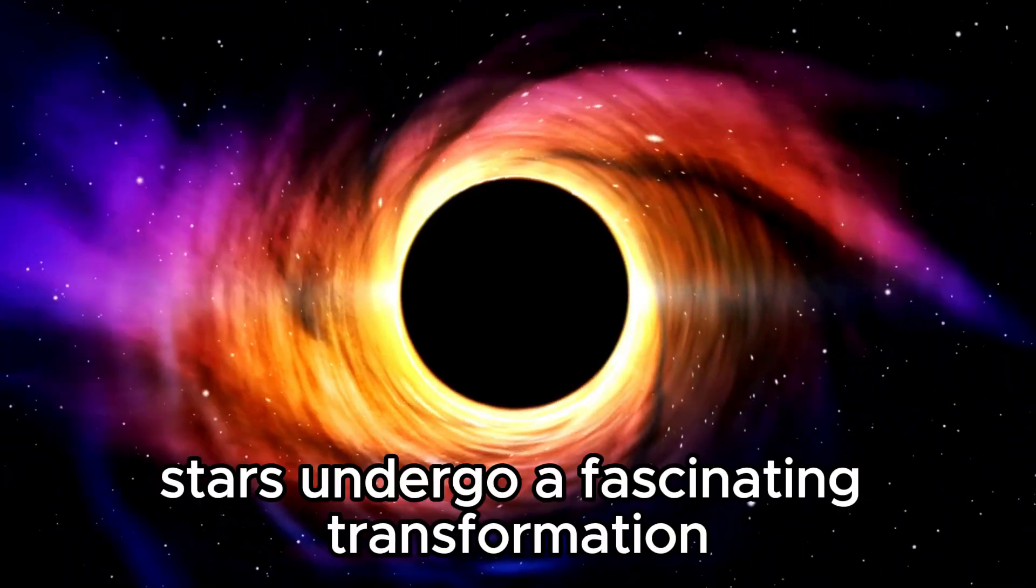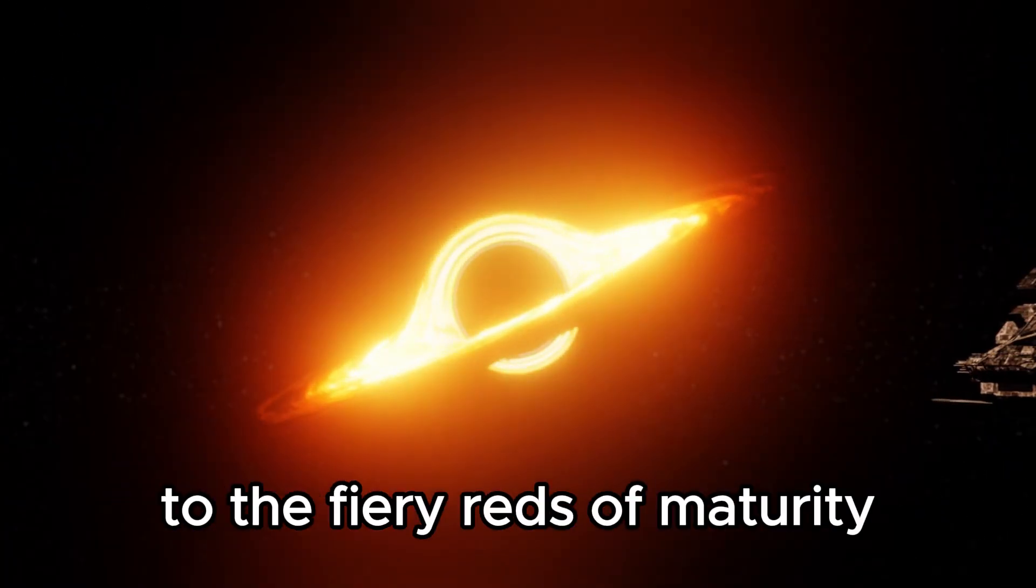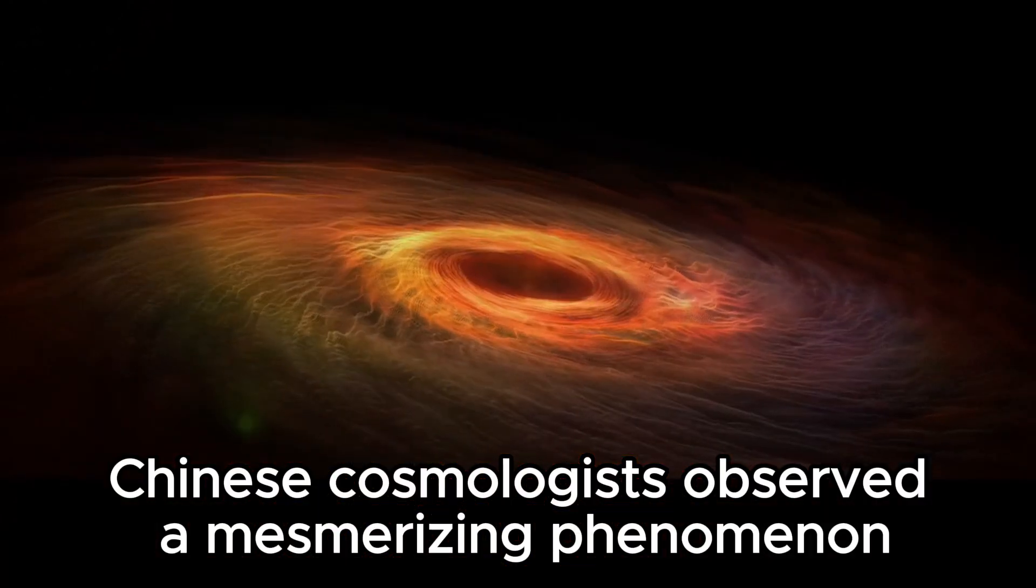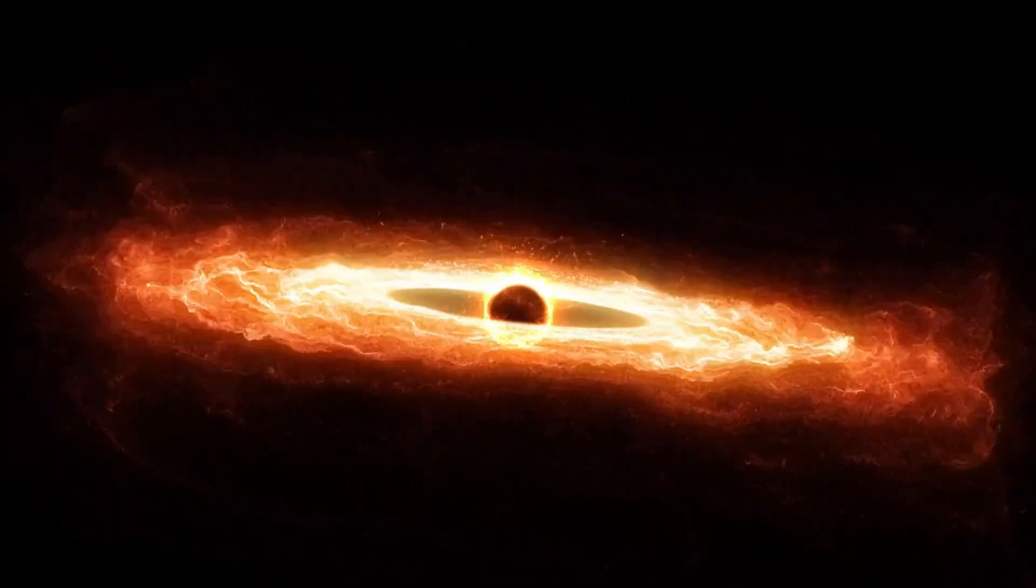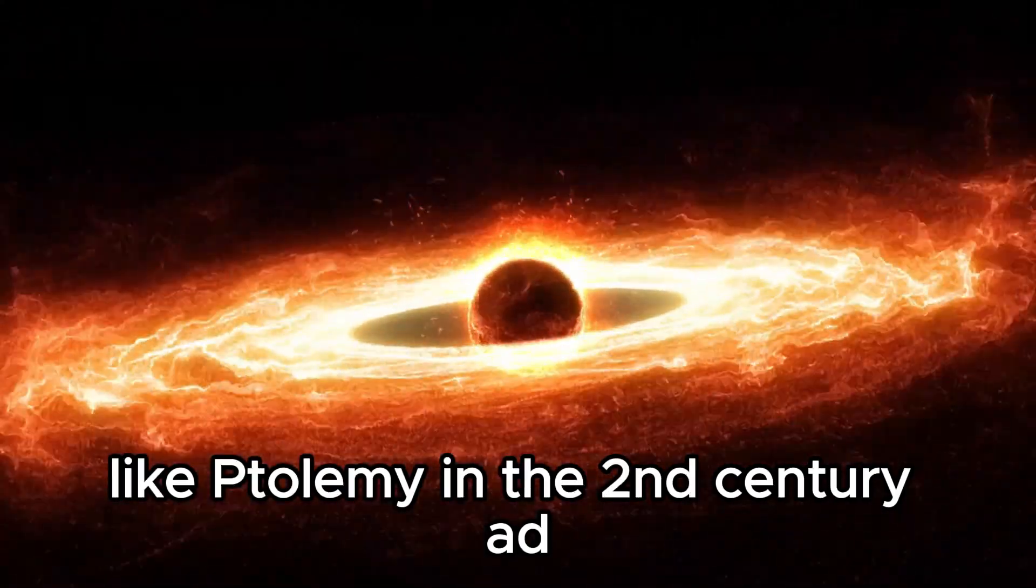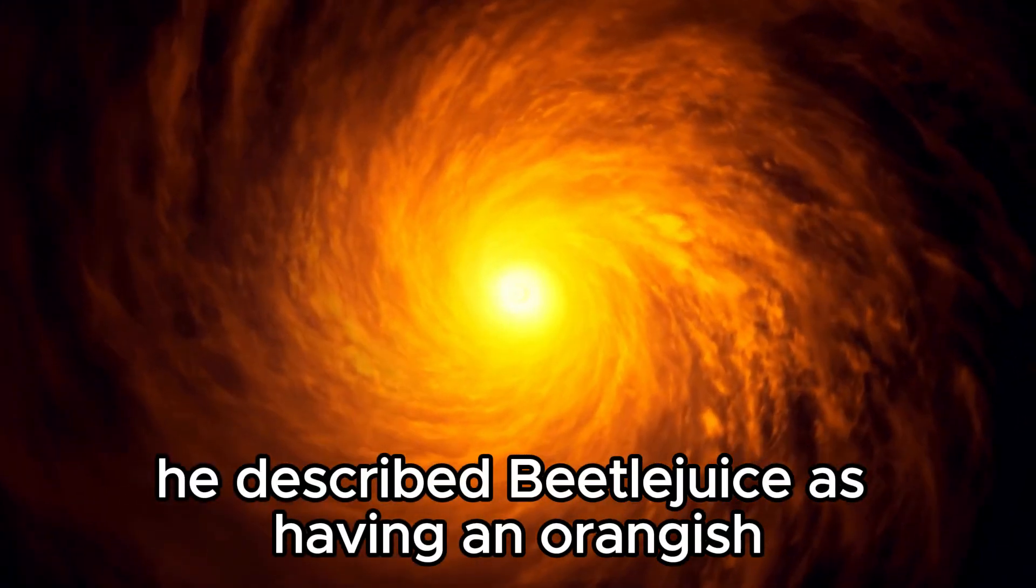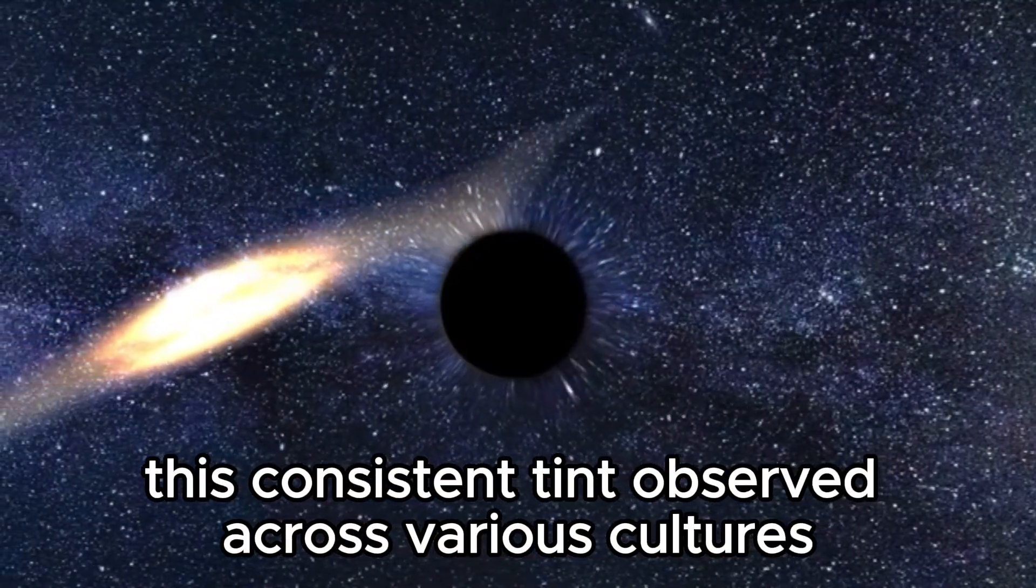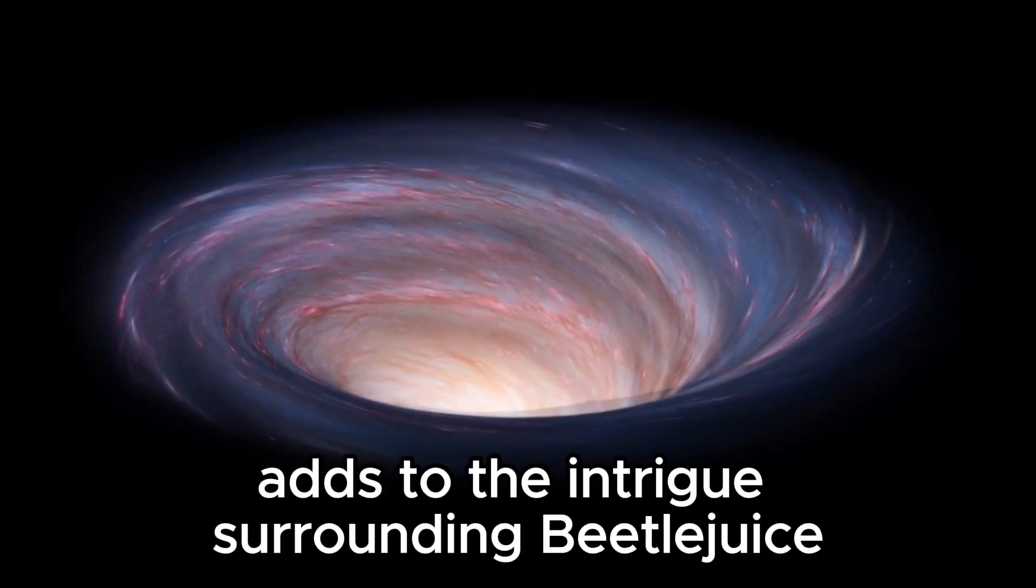A supernova explosion: Stars undergo a fascinating transformation, evolving from the vibrant blues of youth to the fiery reds of maturity. During the 2nd century BC, Chinese cosmologists observed a mesmerizing phenomenon. Betelgeuse's distinct yellow tint set it apart from the celestial tapestry. As centuries unfolded, the torch of observation passed to Greek and Roman astronomers like Ptolemy in the 2nd century AD. In his meticulous records, he described Betelgeuse as having an orangish or tanned appearance, a characteristic that still captivates us today. This consistent tint, observed across various cultures, including medieval onlookers in the Middle East, adds to the intrigue surrounding Betelgeuse.